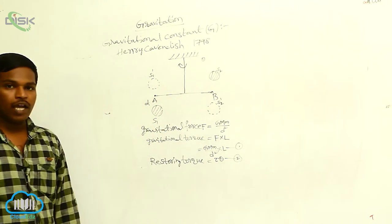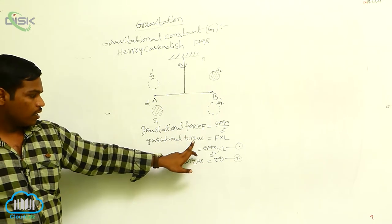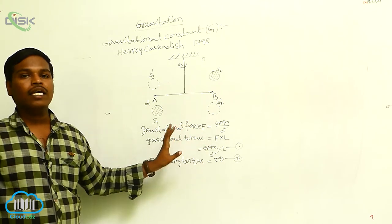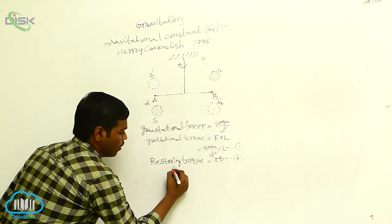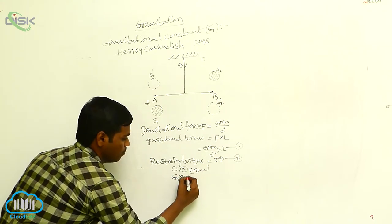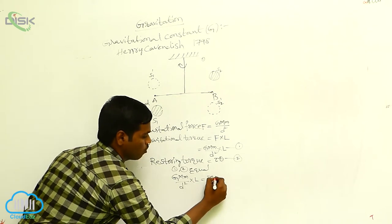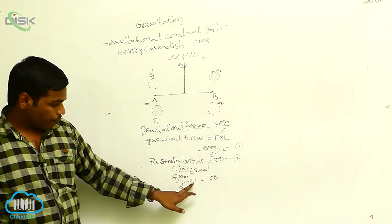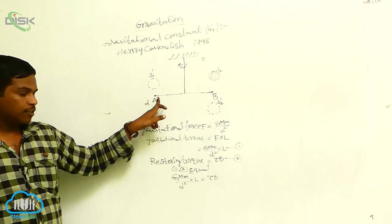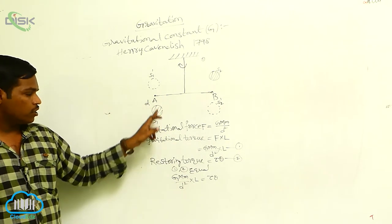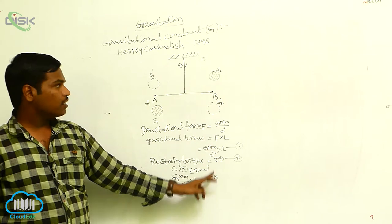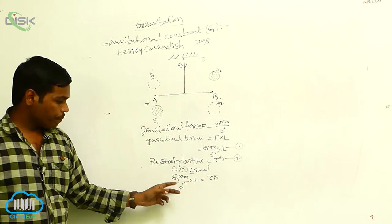The restoring torque is equal to τ × θ. This is equation 2. The gravitational torque and the restoring torque are equal at equilibrium. So from equations 1 and 2: GMm/d² × L = τ × θ. Here all the values are known — M is the mass of the bigger sphere, m is the mass of the lead sphere, d is the distance between the spheres, L is the length of the rod, τ is the torque constant of the thread, and θ is the angle of twisting.